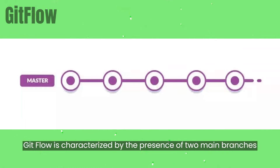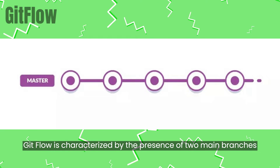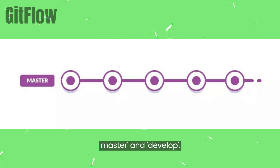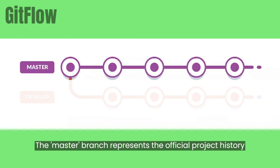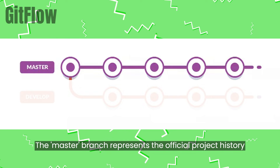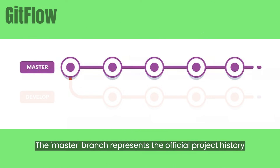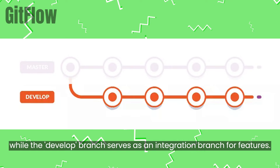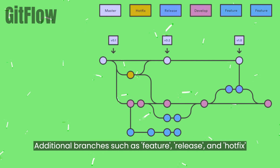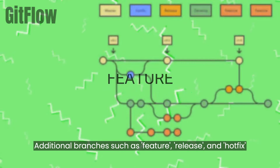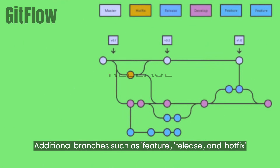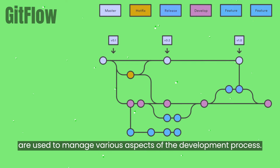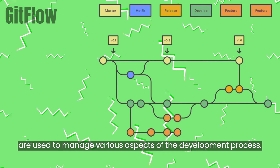GitFlow is characterized by the presence of two main branches: master and develop. The master branch represents the official project history, while the develop branch serves as an integration branch for features. Additional branches such as feature, release, and hotfix are used to manage various aspects of the development process.